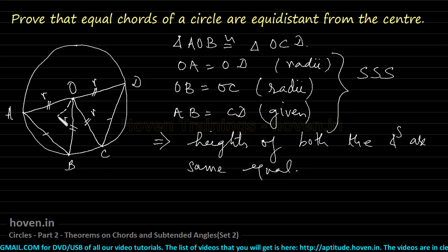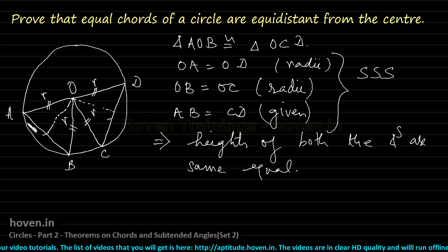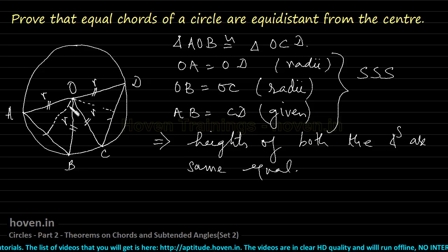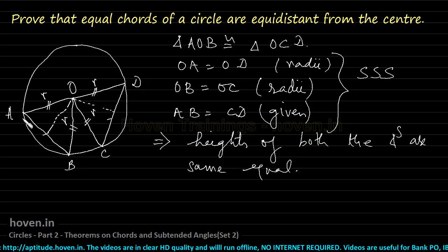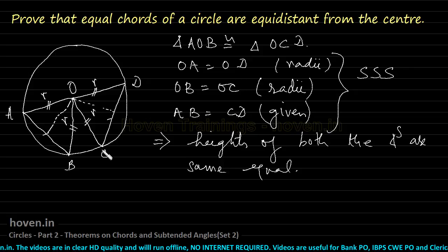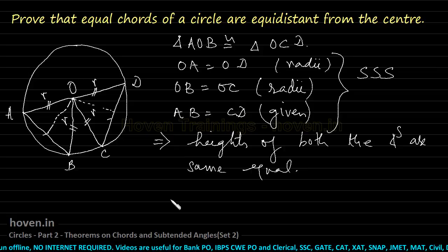If the height of triangle AOB is denoted by one perpendicular line and the height of triangle OCD by another, then the distance of AB from O equals the height of its triangle, and the distance of CD from O equals the height of its triangle. Therefore, both chords AB and CD, which have been given equal, are also at equal distance from center O, which proves the theorem.